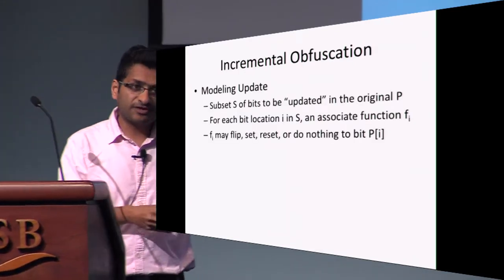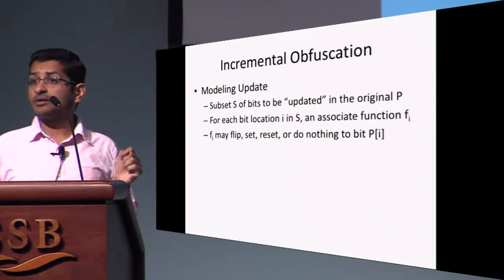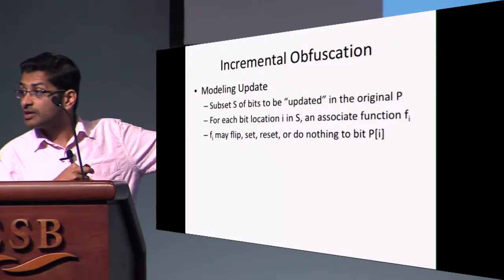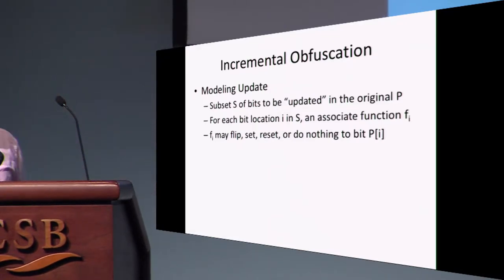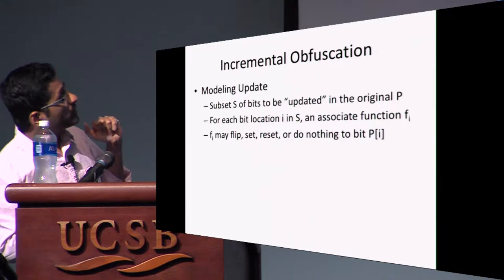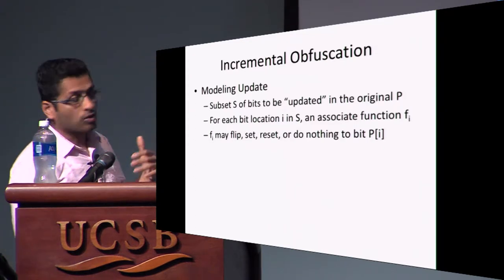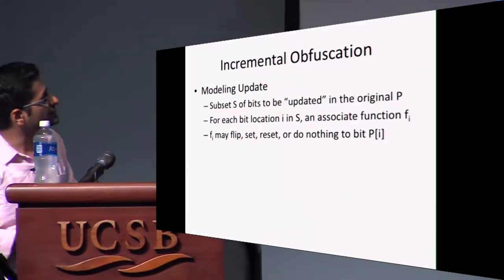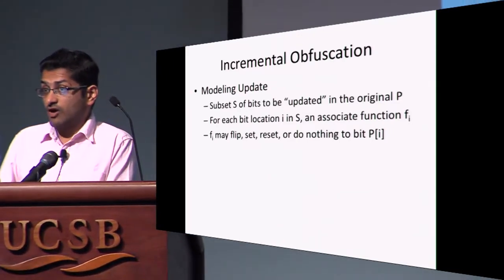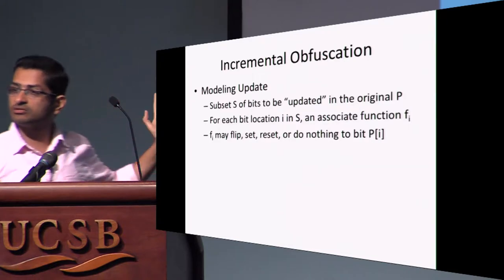Before I can give you the definitions, I need some modeling of how we define an update. Think of any program as a string. I'm going to define an update by a set S, which is a subset of the bit locations — if the program is of size N, it's a subset of {1, ..., N}. For each bit location i in S, we associate it with a function F_i, where F_i could be the flip function, a set function setting the bit to one, a reset setting it to zero, or do nothing. This is how I model an update, and note this modeling makes sense for both the un-obfuscated program and the obfuscated version.